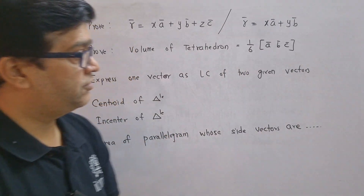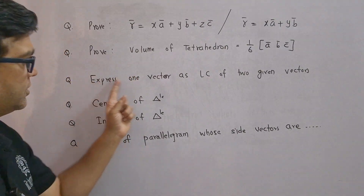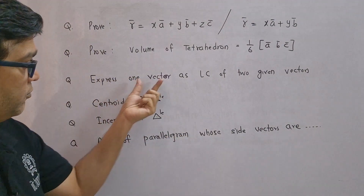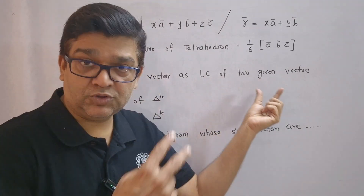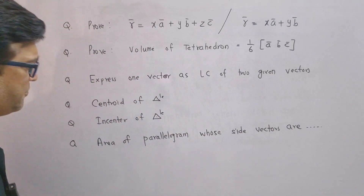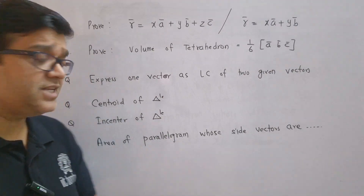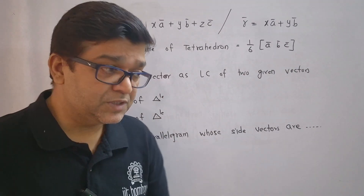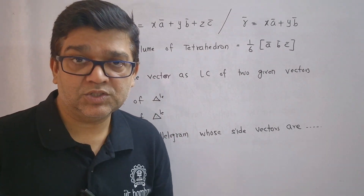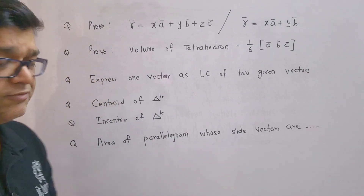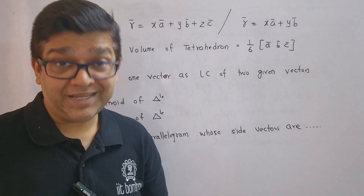Prove that the volume of tetrahedron is one-sixth times the box product of a-bar, b-bar, c-bar — another very important theoretical question. Also important: given one vector, express it as a linear combination of two other given vectors. Problems based on centroid of a triangle, in-center of a triangle, area of a parallelogram whose side vectors are given, and proving that given vertices form a parallelogram are also important questions from vectors.